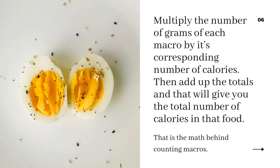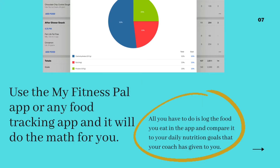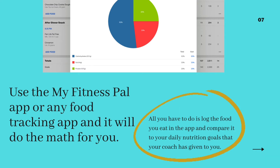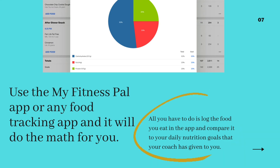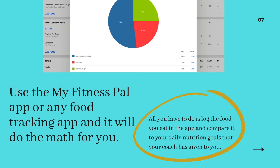Sometimes you want to double-check that a food item is correct. If you use a food tracking app like MyFitnessPal, it makes it easy for you. All you need to do is search and log the food that you're eating, or you can even scan the barcode of that food. Then simply compare your food diary to your daily nutrition goals that your coach gives you.